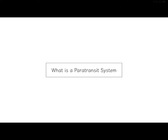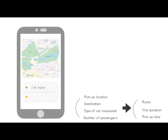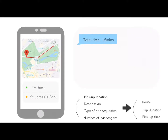I'm going to briefly introduce the research background. In reality, a paratransit system provides transportation service to special groups such as the elderly and handicapped. It simply gets our pickup position, the type of car we want, and the number of passengers. Together with the input destination, the system calls the car and provides us with the optimized route, expected time of the trip, as well as the time it's going to pick us up. In this way, we can formulate the system into a dynamic and heterogeneous dial-a-ride problem.